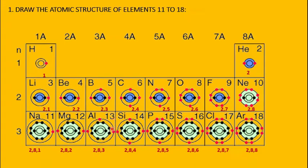Aluminium (atomic number 13): electronic configuration 2, 8, 3. 2 electrons in K shell; 8 in L shell; remaining 3 in M shell. Silicon (atomic number 14): 2, 8, 4. Phosphorus (atomic number 15): 2, 8, 5. Sulfur (atomic number 16): 2, 8, 6. Chlorine (atomic number 17): 2, 8, 7. For all period 3 elements, draw 3 shells (K, L, M), with K having 2, L having 8, and M having the remaining electrons.